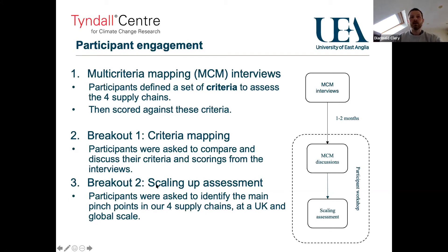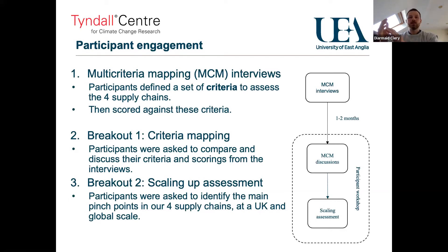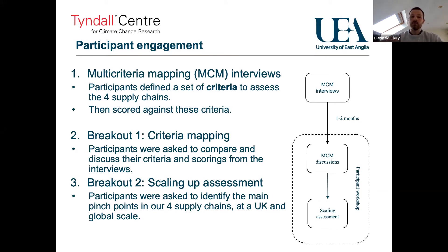In the second breakout group, we went through a scaling-up exercise. First we asked our experts to identify the pinch points in our supply chains — the main problem areas. Then we took things to a UK scale, asking them to think about what would happen if these supply chains were scaled up to the amounts required to hit UK climate targets for GGR. Then taking it again to the global scale of the amount of GGR that might be needed globally for climate change, asking what new issues would arise.